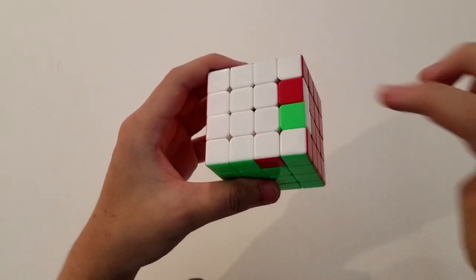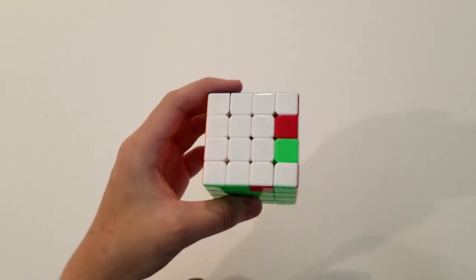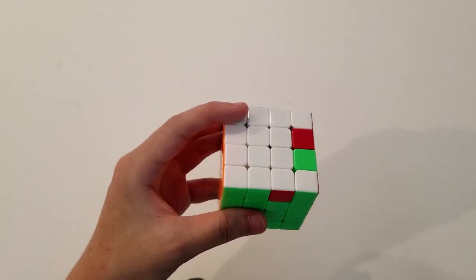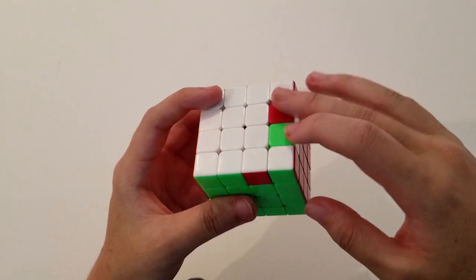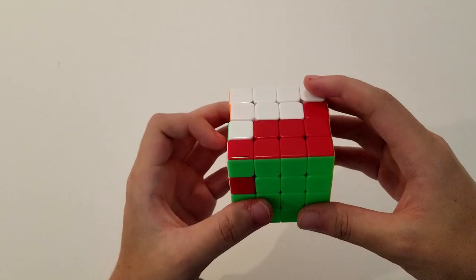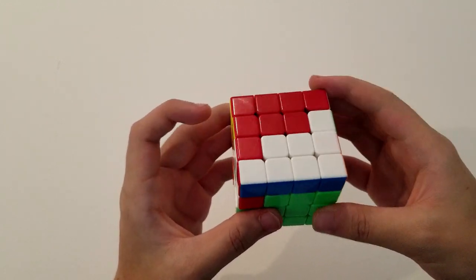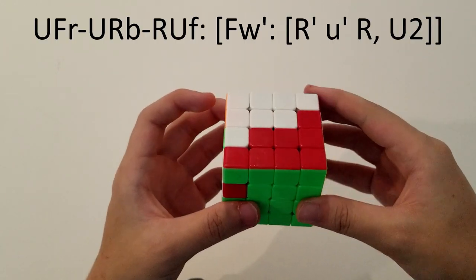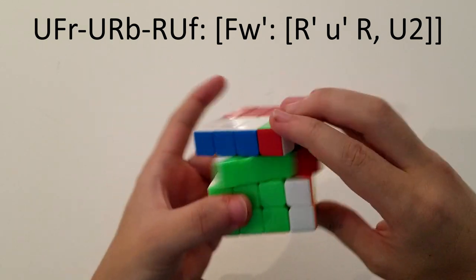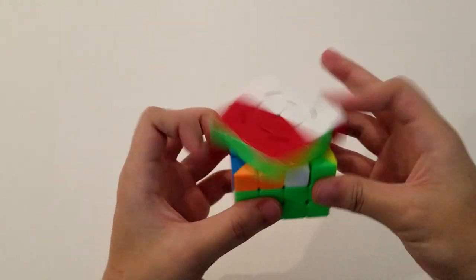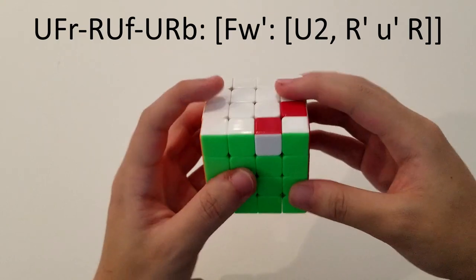This case, with the targets in UR, is quite unique because there are a lot of algs that people use that I think are all pretty decent. What I do personally is split these up with F-wide prime, creating a U2 interchange and this really nice insertion of R-prime, U-wide prime, R. So you can just finish off the column like that. And for the inverse, it's the same principle.